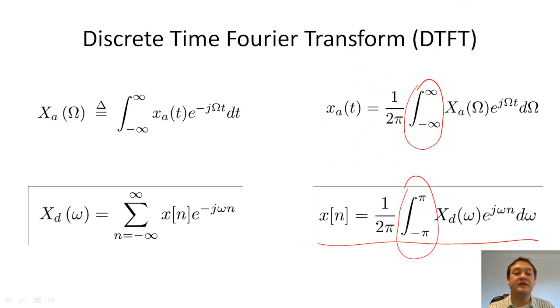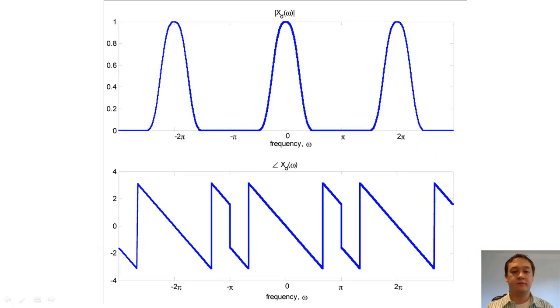I will explain why we change the integral by showing an example DTFT. On the top graph, you see the magnitude of the DTFT. On the bottom graph, you see the phase. Notice that both graphs are periodic with period 2 pi.